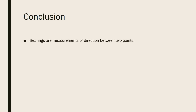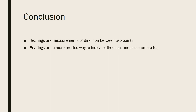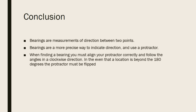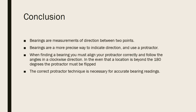In conclusion, we have learned today that: one, bearings are measurements of direction between two points; two, bearings are important as they offer a more precise direction; three, when finding a bearing the protractor must start from zero, and if the feature is beyond the first 180 degrees the protractor must be flipped; and lastly, correct protractor technique is necessary for accurate bearing readings.